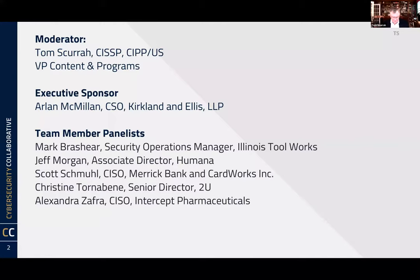Jeff is an associate director with Humana. He leads their metrics and reporting program. Their goal is really to protect members' data — as a large insurance company, protecting members' healthcare information — and a lot of the ways they do that is driving insights and visibility into their security program through metrics collected on a daily basis.